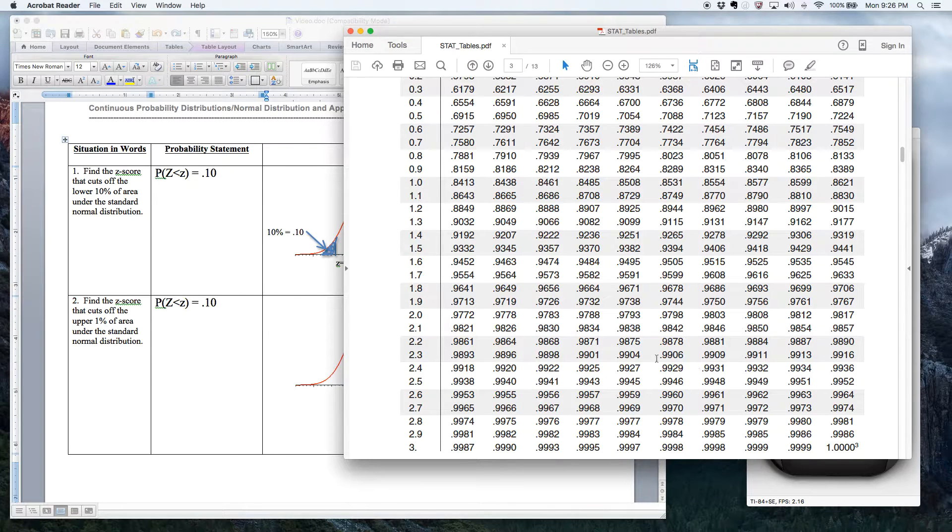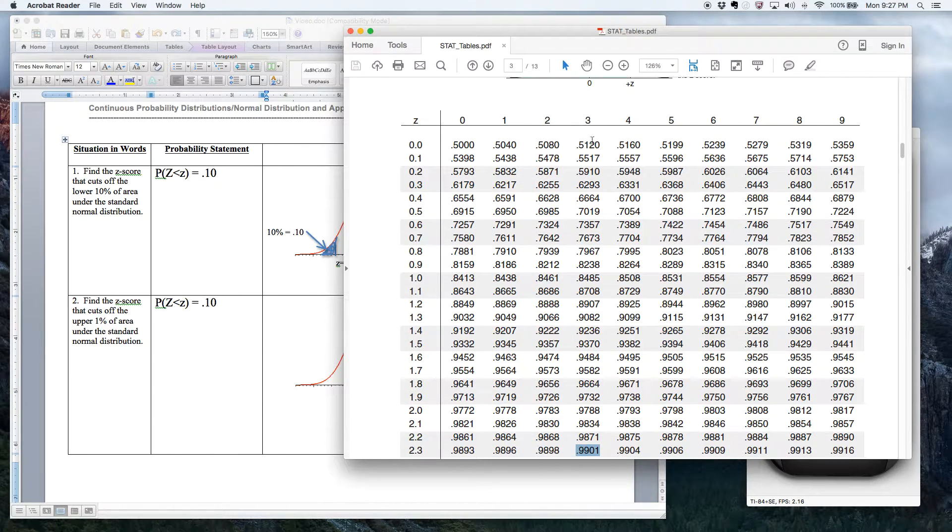All right, so I'm going to find the closest area I can to .99, 99%. All right, so here we go. 9906, 9904. Here we go right here. Look at that. 9901. All right, so that one right there is closer than this one. This is 9898. This is two ten-thousandths away. This is only one ten-thousandth away. All right, so this one's closer. And that z-score is 2.33.